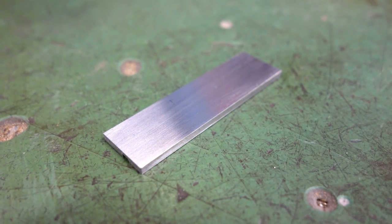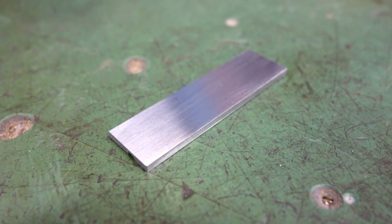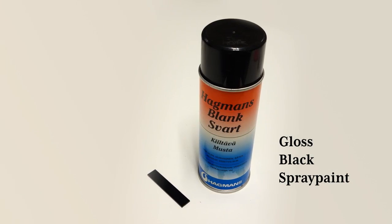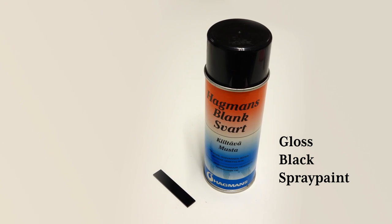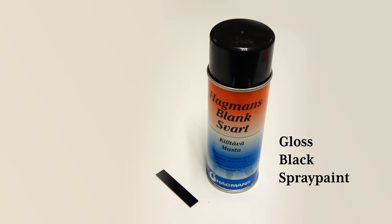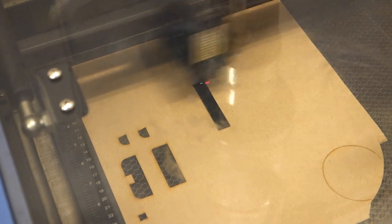So let's remachine the blade, while cursing yourself profusely for having to redo work. This time, instead of taping the metal, we spray painted it with gloss black paint and let it dry overnight. Just as the tape, the paint will act as an insulator from the salt water and the electricity.